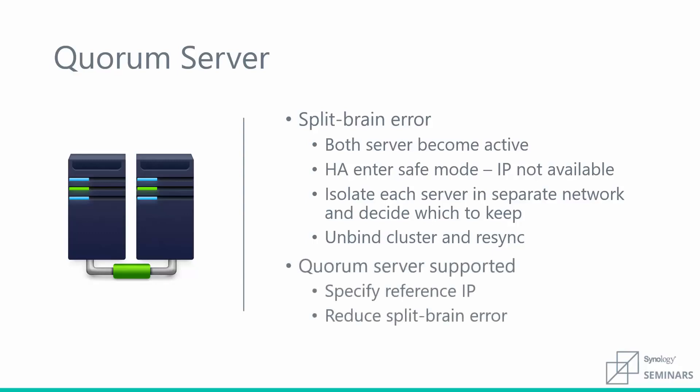One thing you can do to prevent split-brain errors is implement a quorum server. A quorum server is basically an anchor in your environment — this could be your DNS server. It's something both the active and passive server will ping and wait for a response from to figure out their roles. For example, if your network goes down and both servers are offline, they'll start pinging that quorum server. If they're not getting a response, the passive server will realize the network has gone offline and that it does not need to take on the role of the active server. Setting up a quorum server is a great check-in to keep both servers in their assigned roles and protect against split-brain errors.